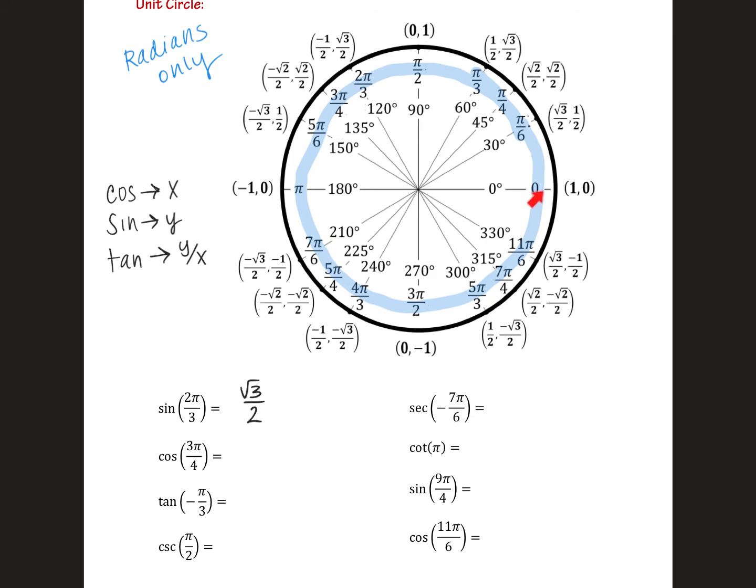Cosine of 3π over 4. That's in quadrant 2. Cosine is our x value. So negative square root of 2 over 2.